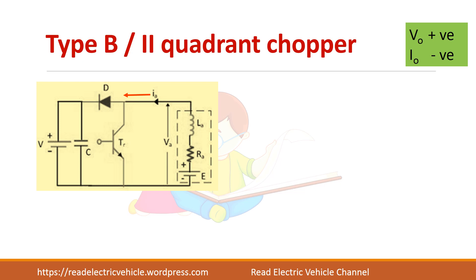This is the circuit diagram of the second quadrant chopper. In the second quadrant, V should be positive and I should be negative. The current direction is pointing towards the source, so the current is negative. The diode is connected in this direction so that current will flow accordingly. From the supply you will not receive any current — only from the load does current flow to the source, because this is a regenerative chopper.